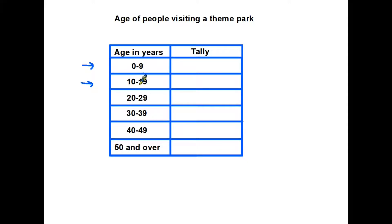Now the rules are that the groups have to be next to each other — by that I mean no gaps. So if someone is nine years old they fall into this group, and as soon as they have their 10th birthday they fall into the next group, so there has to be no gap in between. Also the groups can't overlap; it can't be possible for somebody to fit into two groups. So if this group finishes at 19, the next has to start at 20, then 30 and so on.